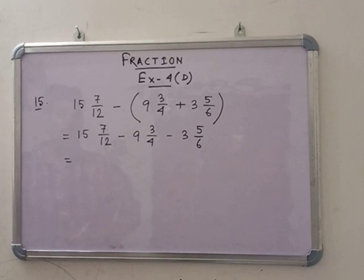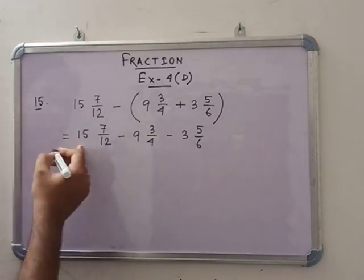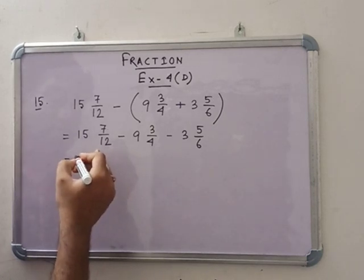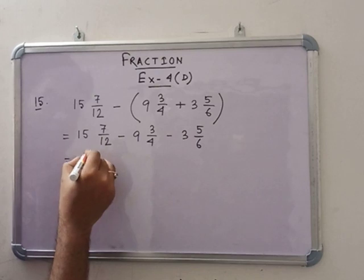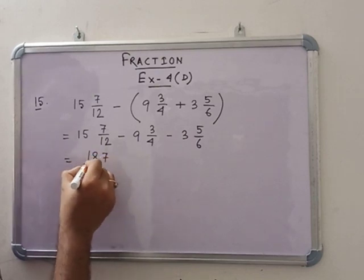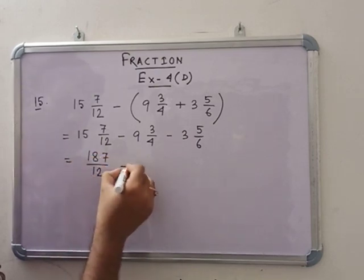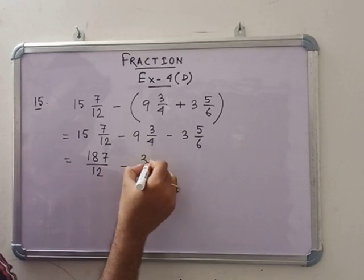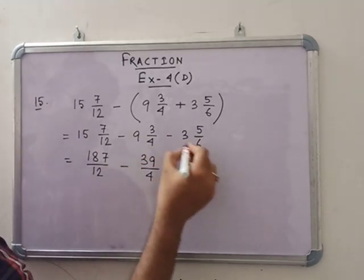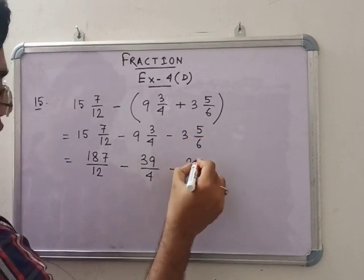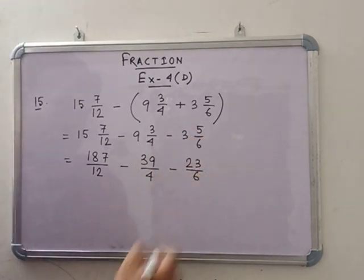So now, if we write the improper fraction, then we can write this as 187 by 12 minus 39 by 4, that means 23 by 6.